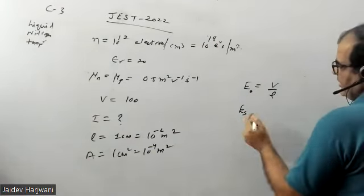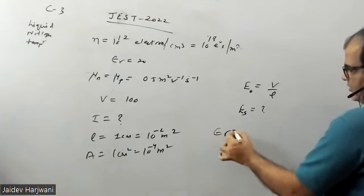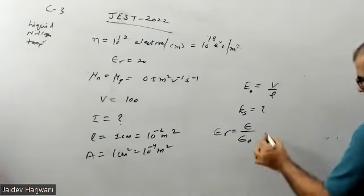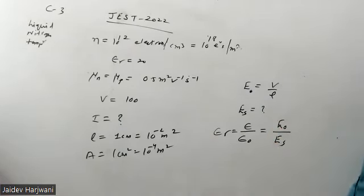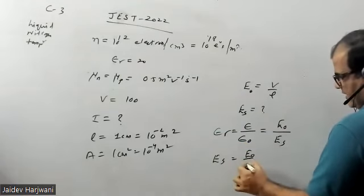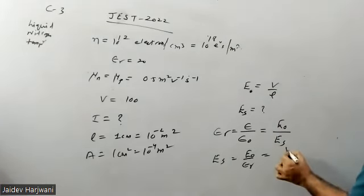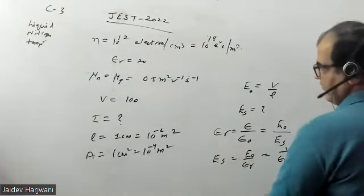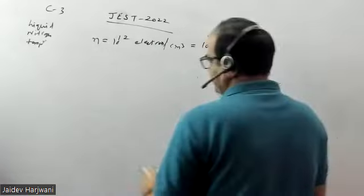Since the semiconductor has a dielectric constant, the electric field inside will be Es instead of E₀. The dielectric constant εᵣ is defined as the permittivity of the medium divided by the permittivity of vacuum, which also equals E₀ divided by Es. So we can write Es = E₀/εᵣ = V/(εᵣ·L). This is the electric field value inside the semiconductor medium.